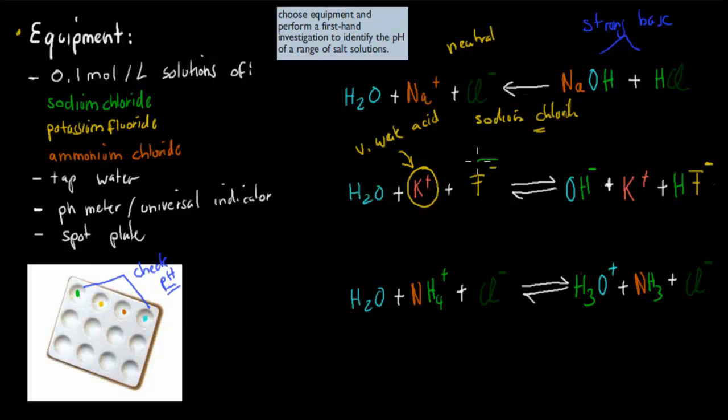we had fluoride ions, which came from, the opposite was the conjugate, so hydrofluoric acid was the acid, the conjugate base is our fluoride ion, and this is a stronger conjugate base than potassium ions.